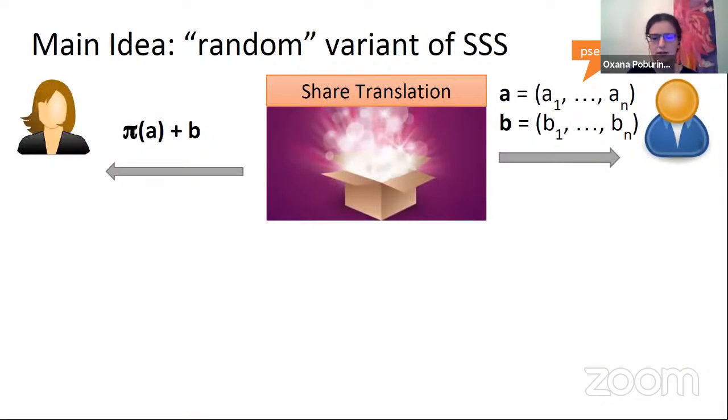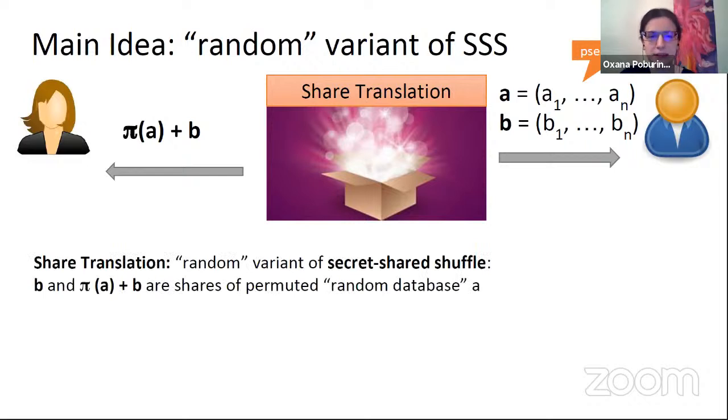Okay. And in some remaining time, let me mention the crude idea of our work. So we look at the primitive, which we call a shared translation, which you can think of a random variant of a secret shared shuffle. So this primitive does the following. It samples internally two sets of random or pseudo-random elements, set A and set B, and it sends both of them to Bob. And what Alice gets is permuted A plus B. And again, the permutation is not known. You can view this primitive as a random variant of a secret shared shuffle. Indeed, think about A as a random or pseudo-random database, which is out of control over parties. It's just generated by the magic box here. So A is this random permutation. And then you can think about B and permuted A plus B to be secret shares of a permuted random database A. So in this sense, this is a random variant of a secret shared shuffle.